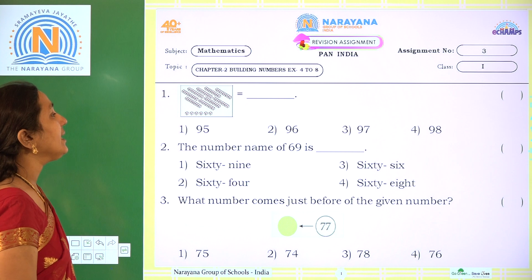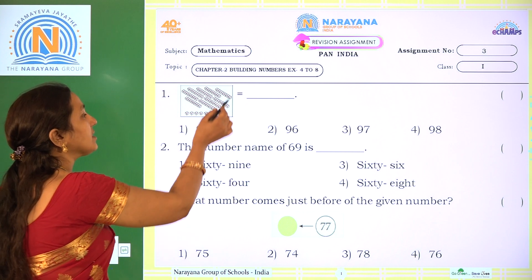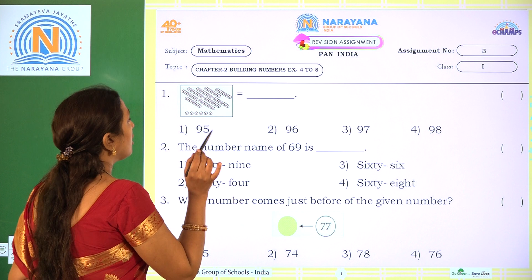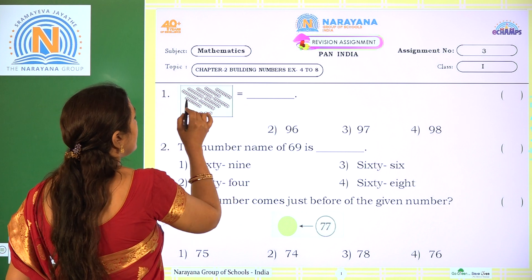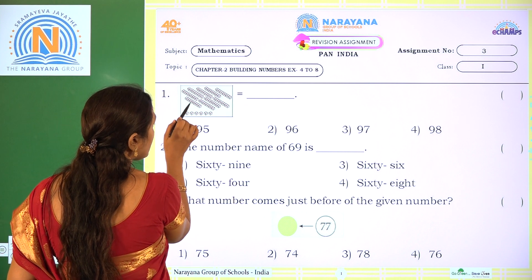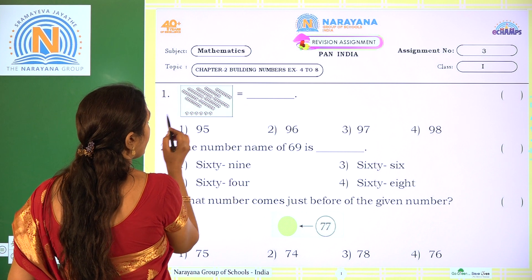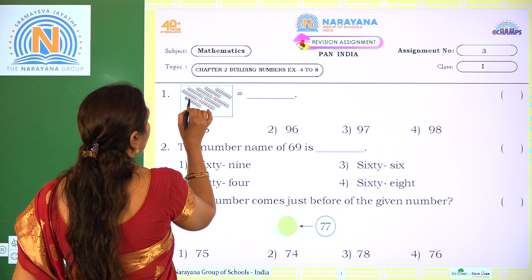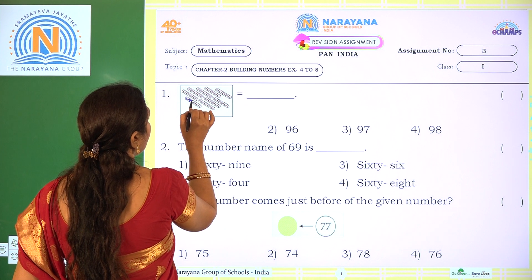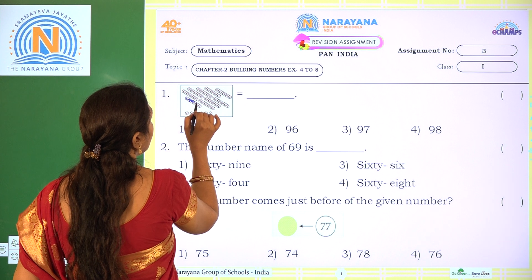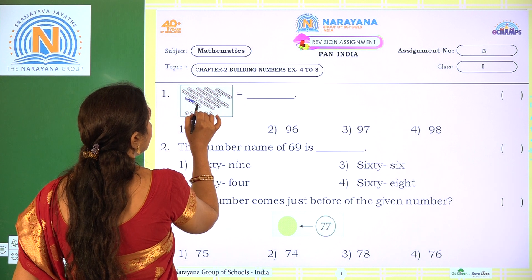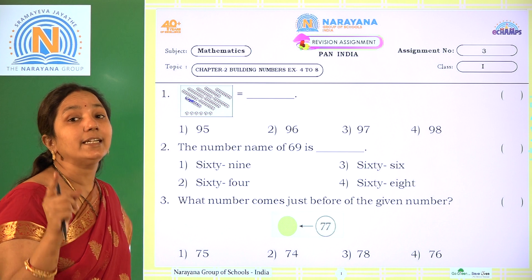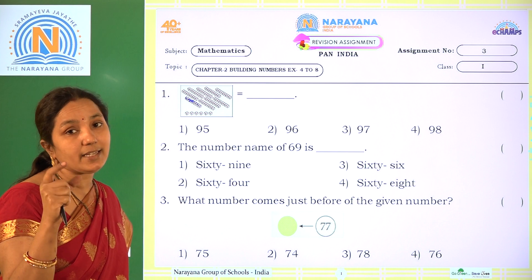Coming to the first one. Blocks are given here and we have to count the number of blocks. Count along with me children. Each long block has 10 single blocks: 1, 2, 3, 4, 5, 6, 7, 8, 9, 10. So each long block has 10 single blocks.